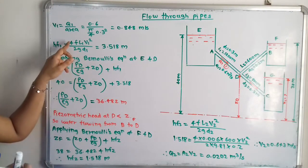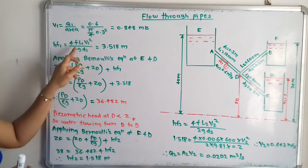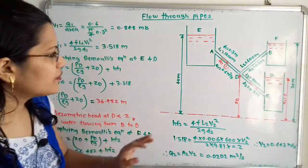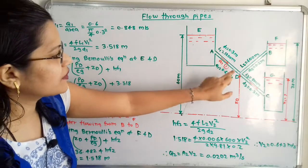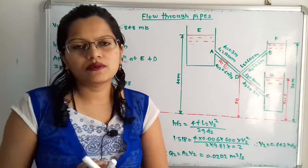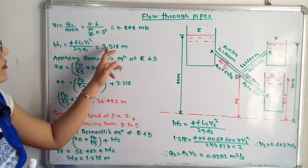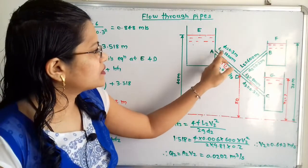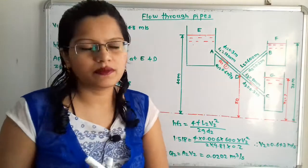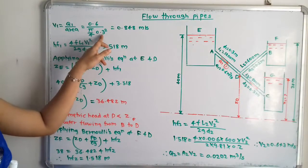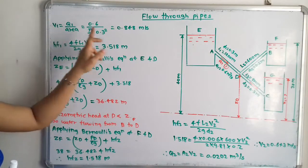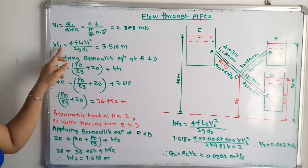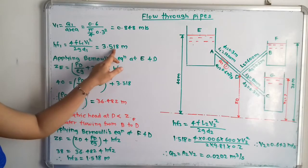The formula for HF1 is 4FL₁V₁² / 2gD₁. V1 is not directly given, but discharge Q1 is given, so V1 = Q1 / area. With D1 = 0.3 m, the area is π/4 × 0.3², giving V1 = 0.848 m/s. From that, HF1 = 3.518 m.